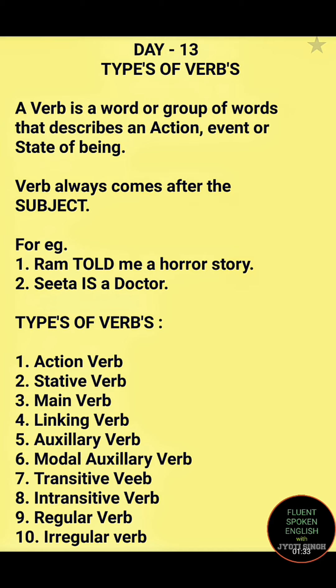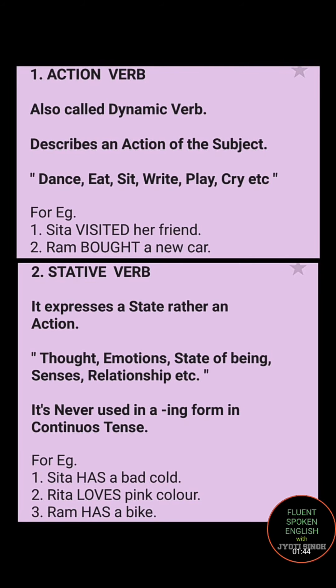Action verb tells you about the action — it describes an action of the subject. It is also called a dynamic verb. For example: dancing, eating, sit, write, play, cry, weep, etc. These all are actions because an action is being done.